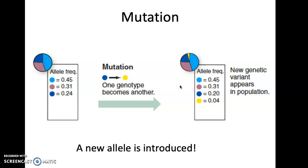A new genetic variant has appeared, sort of out of nowhere, from a random mutation that occurred. That happens infrequently, but it does happen.